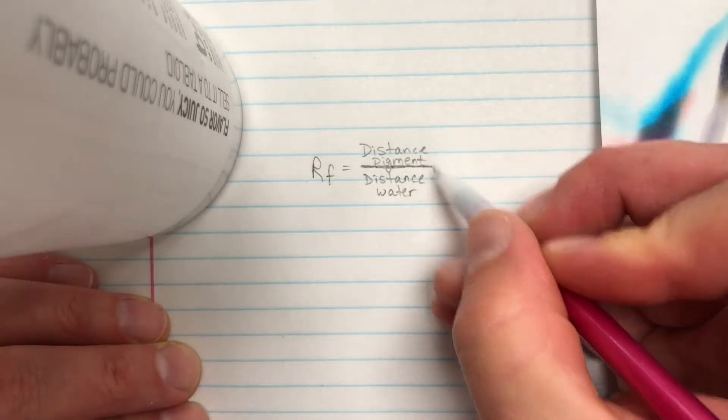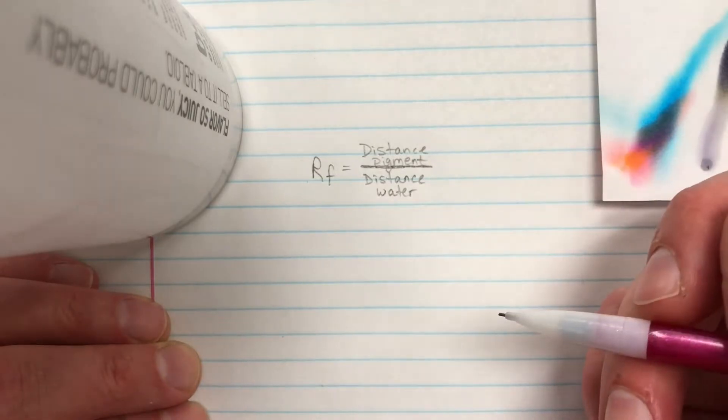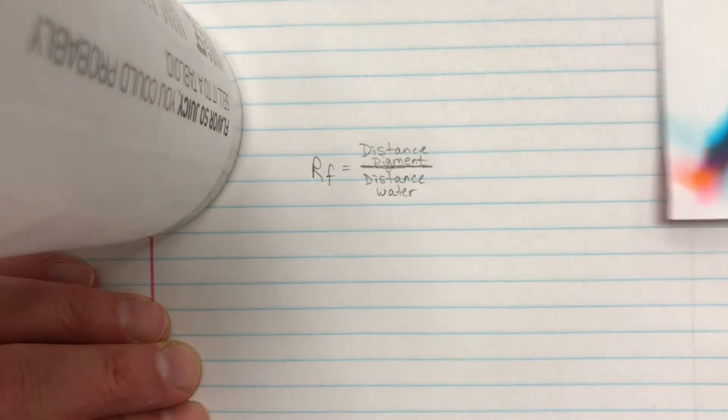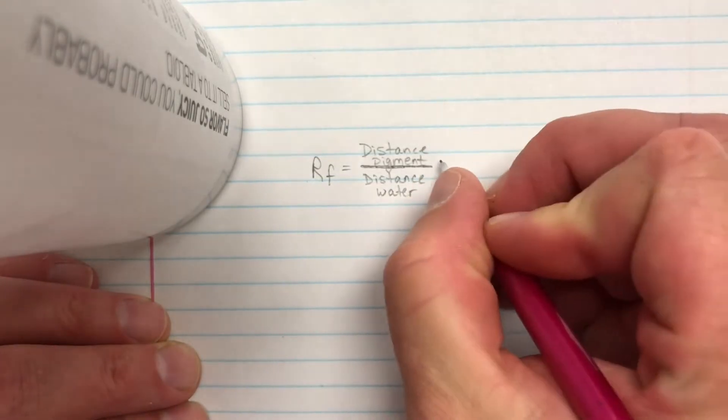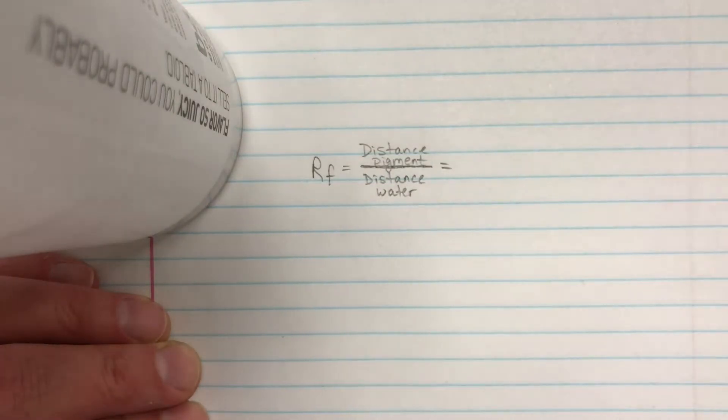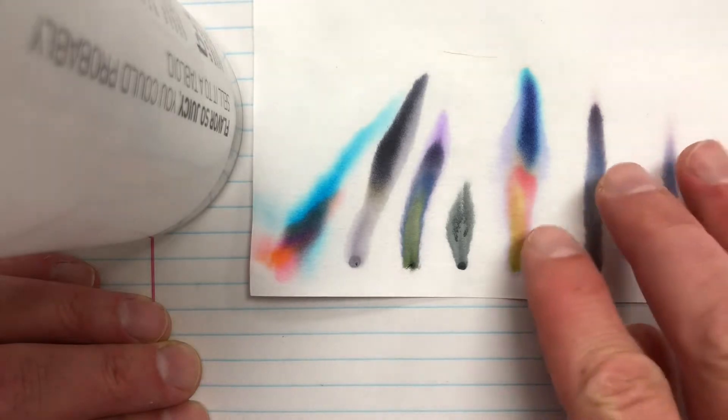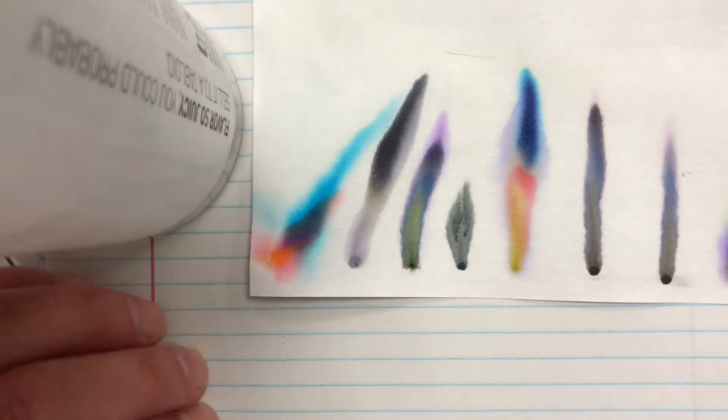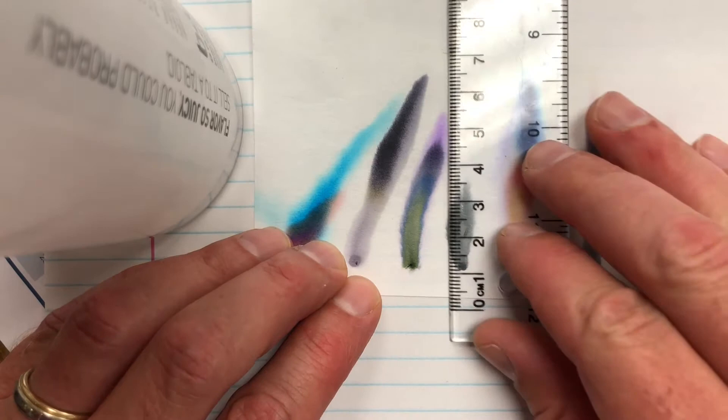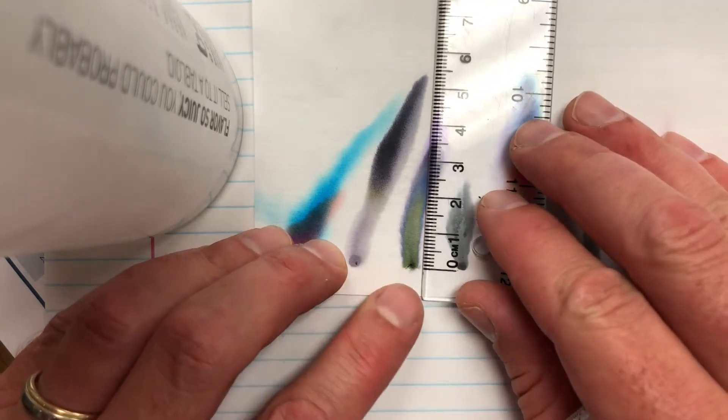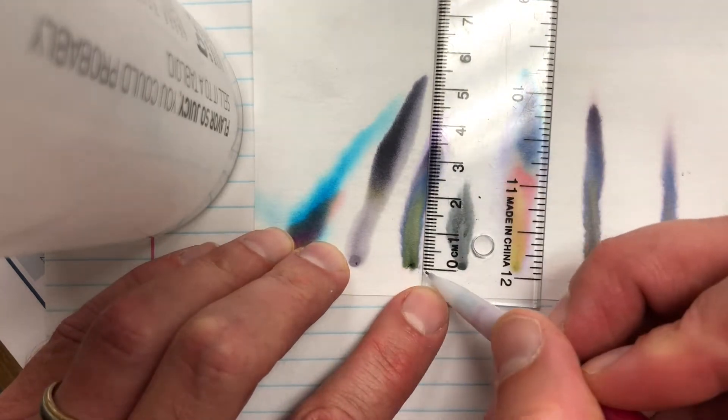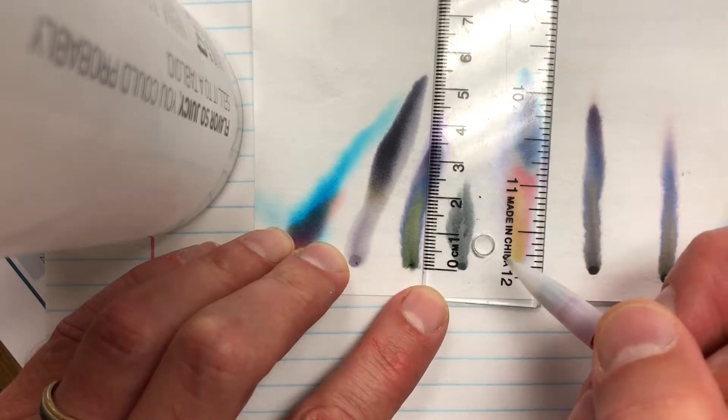You can use millimeters or centimeters for either of these. So for instance, what I want to do right now is find out, let's take a look at this sample, let's use sample three. I'm going to find out what the total distance of the water was. So if I take my ruler here and I'm going to use centimeters and I go from the very bottom right where the dot was.